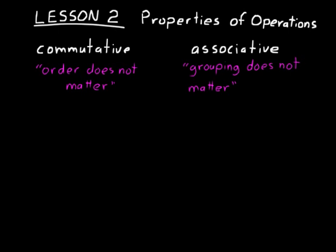For the commutative property: two plus three is the same thing as three plus two. It doesn't matter what order you put the addends in. Same with multiplication — two times three is the same thing as three times two. The order you put those factors in does not matter. Remember, these only work for addition and multiplication.